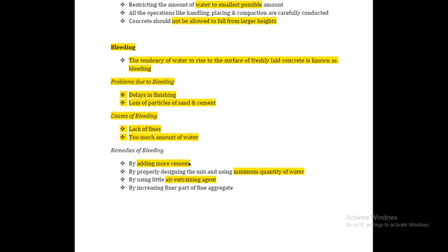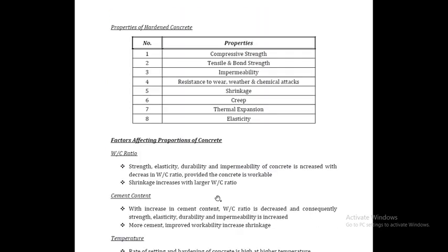To reduce bleeding, use more cement and the minimum quantity of water. Air-entraining agents should be used. Increasing the proportion of fine aggregate also helps reduce bleeding.